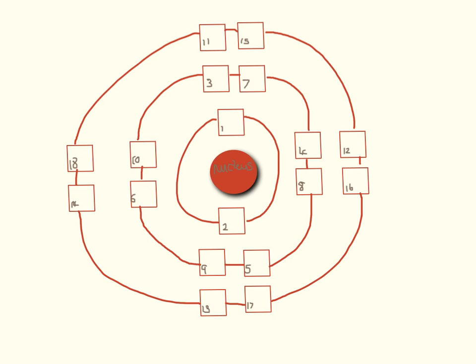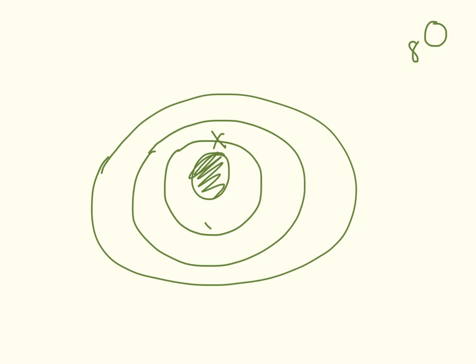Now we've done a few together, I'd like you to have a go at drawing the electron arrangement for oxygen by yourself, then come back and check your answer. Oxygen's atomic number is eight, so we draw eight electrons. Here is our nucleus in the middle, here are our shells, and we count one through to eight placing the crosses.